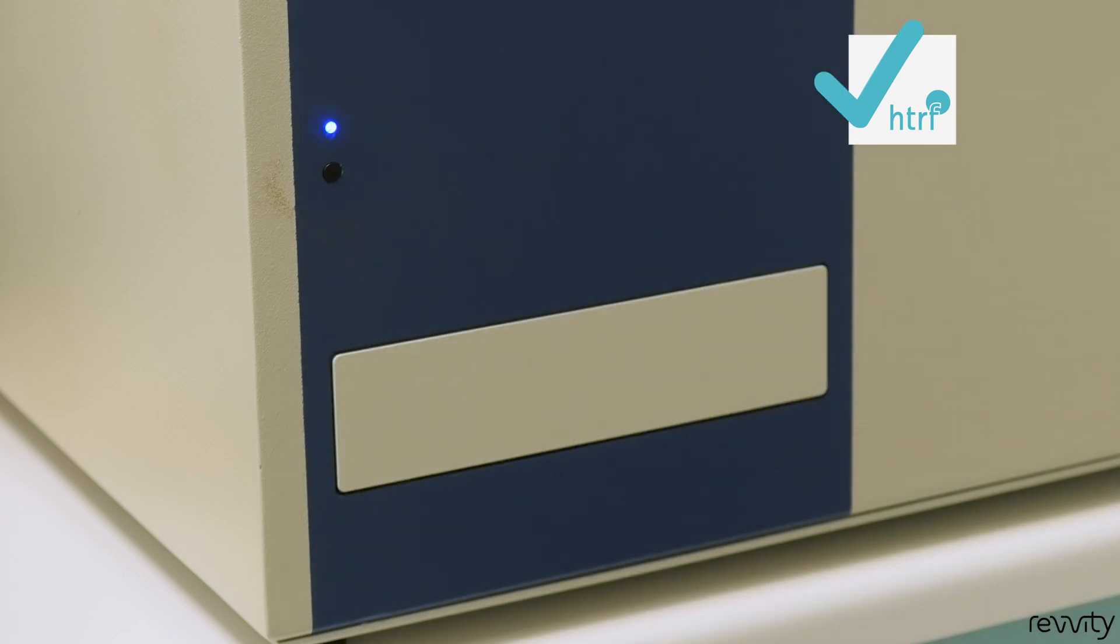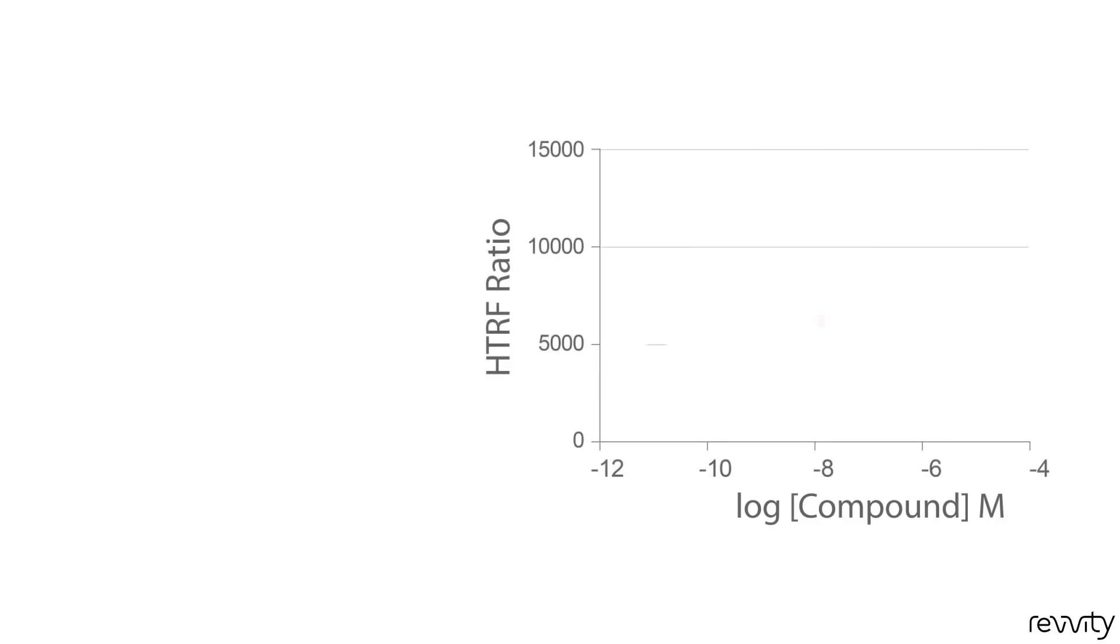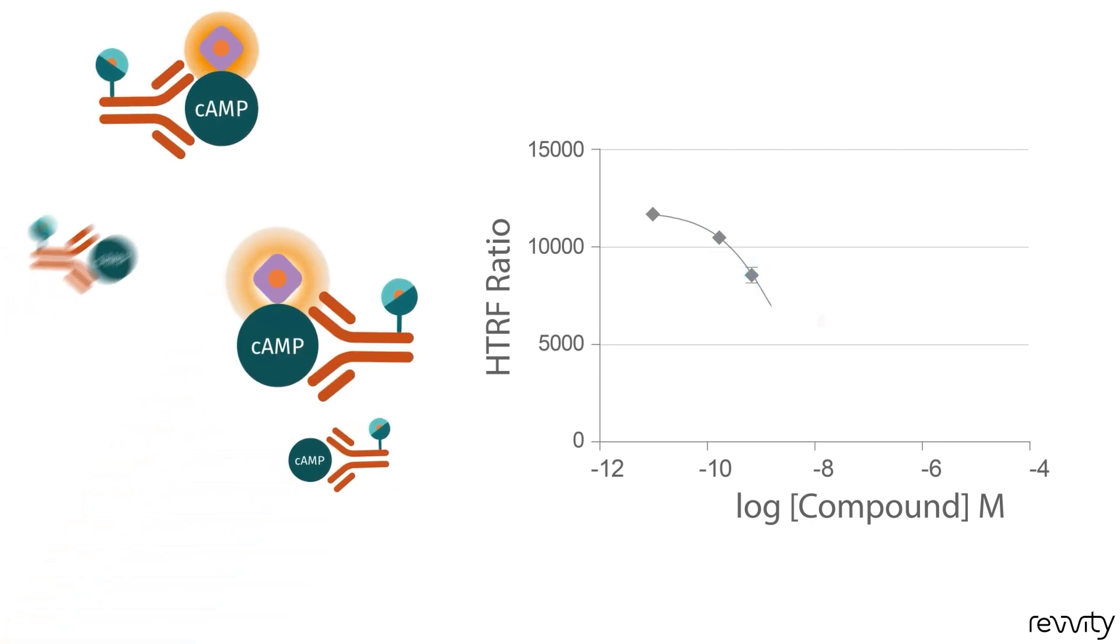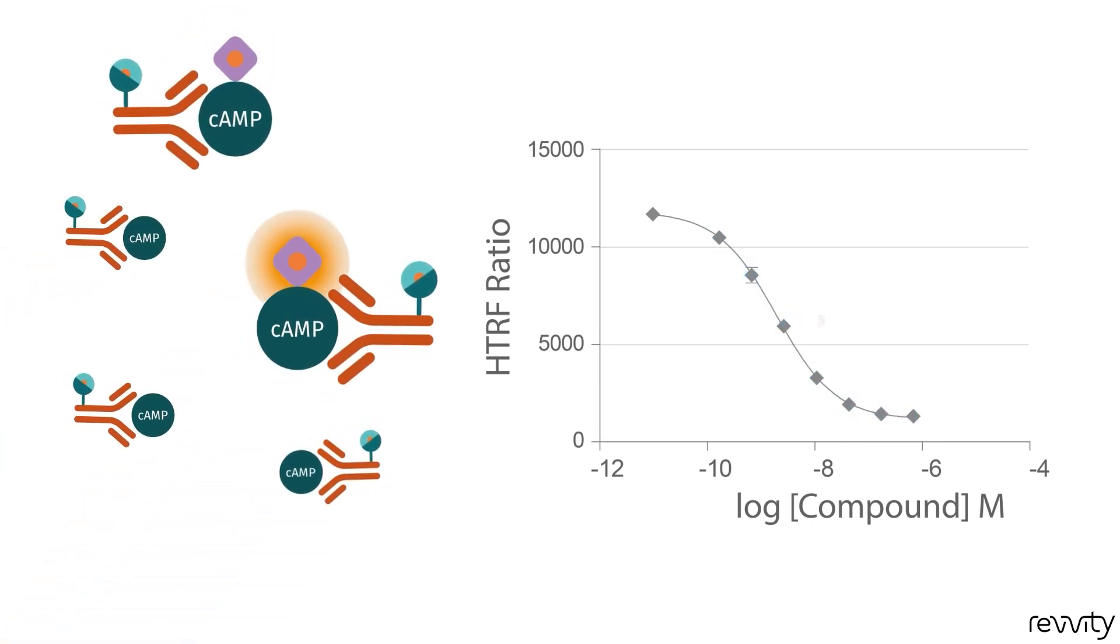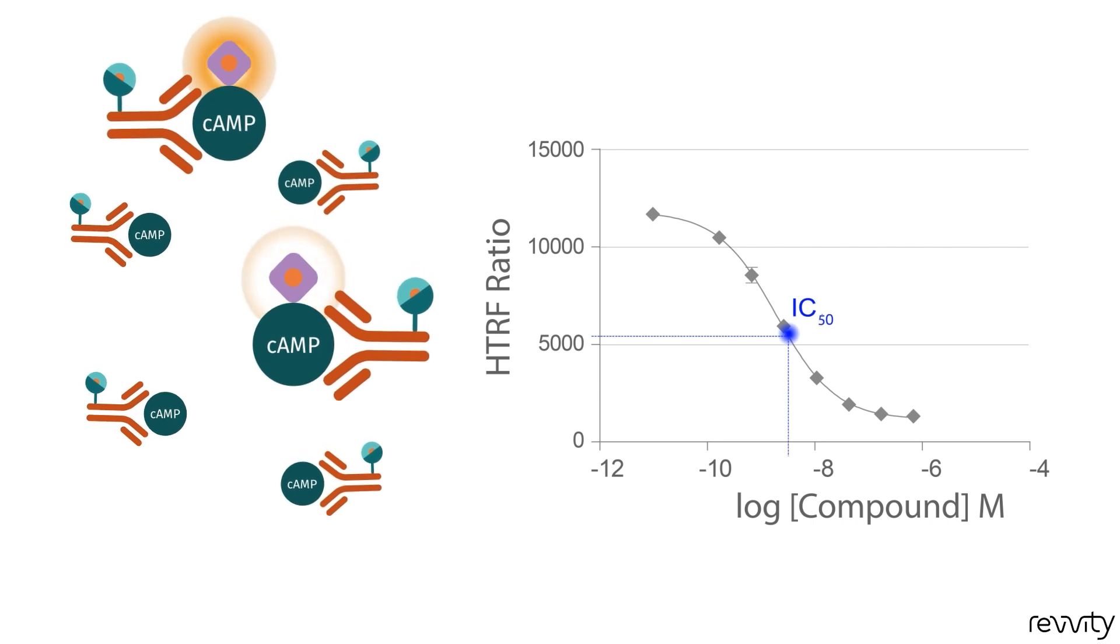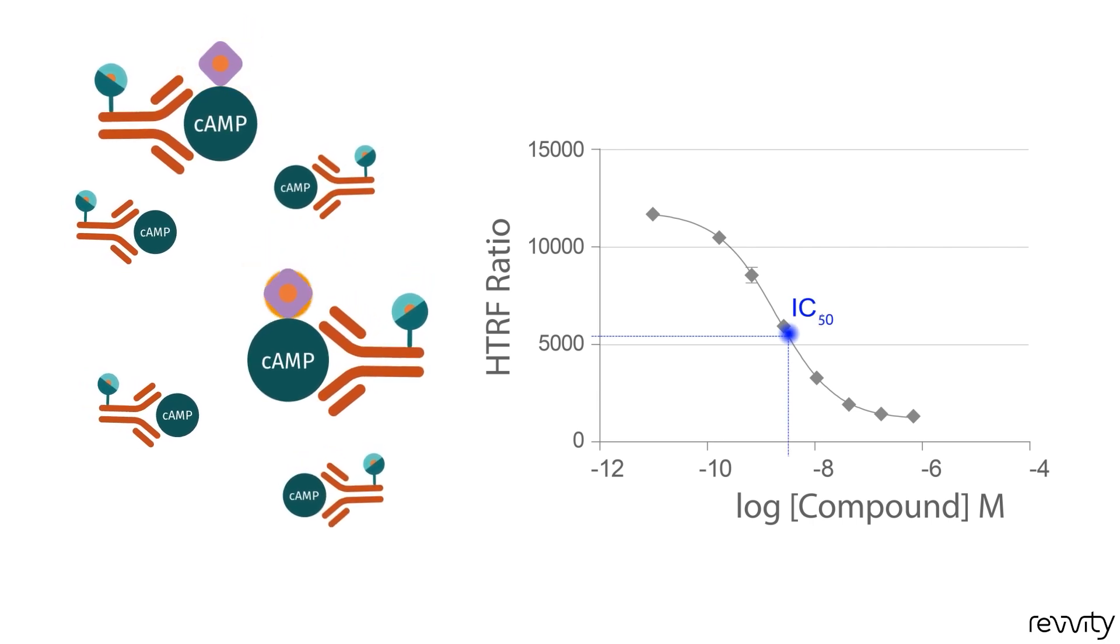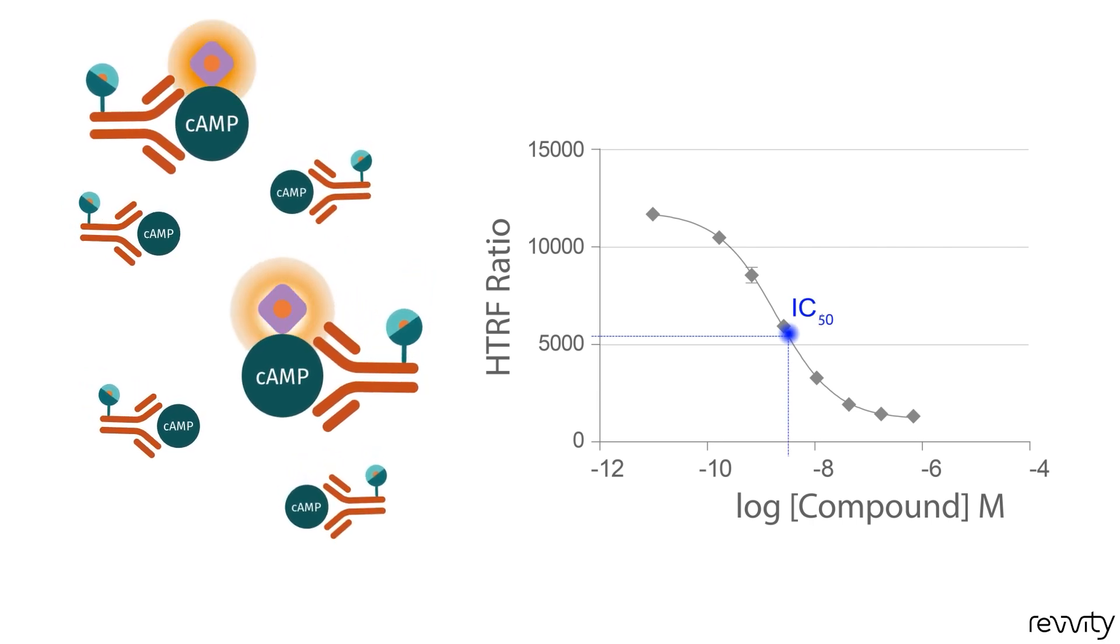Since this is a competition assay, an increase in cyclic AMP correlates with a decrease in fluorescence. The lower the fluorescence signal, the higher the concentration of unlabeled cyclic AMP produced by the cells. The dose responses will allow you to determine your IC50 or EC50.